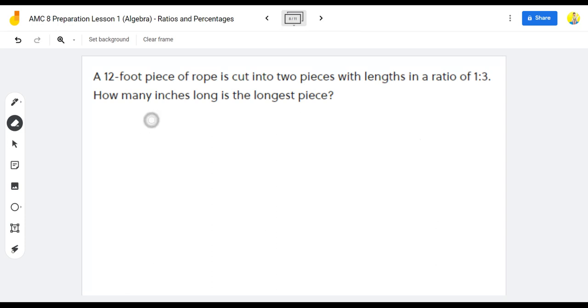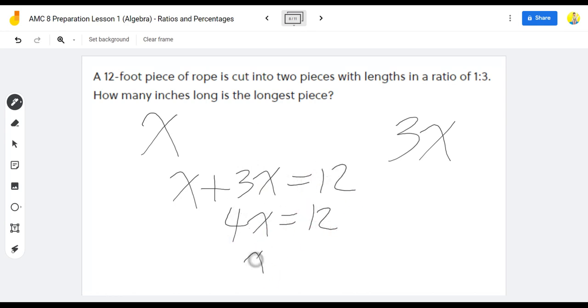So if we let x be the length of the smaller piece, and 3x be the length of the larger piece, we know that both of them added together equals 12. So x plus 3x equals 12. 4x equals 12, meaning that x equals 3. And since x equals 3, the longer piece is 3x, and 3x is equal to 9.